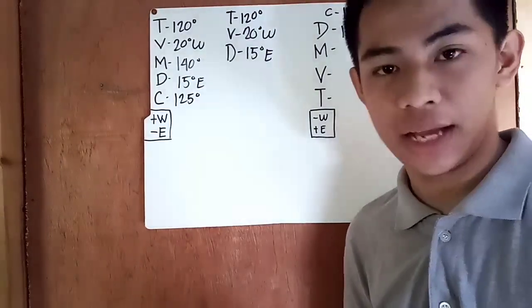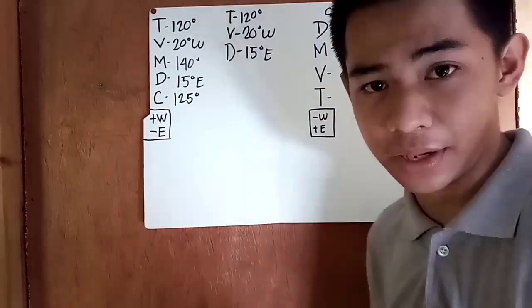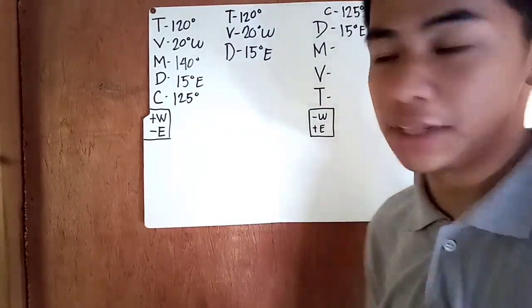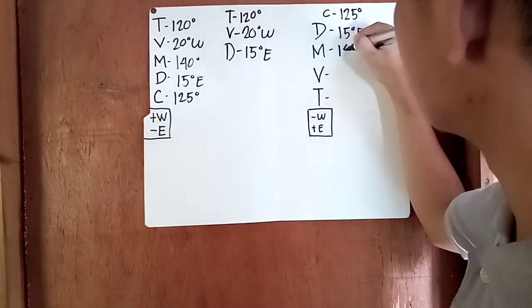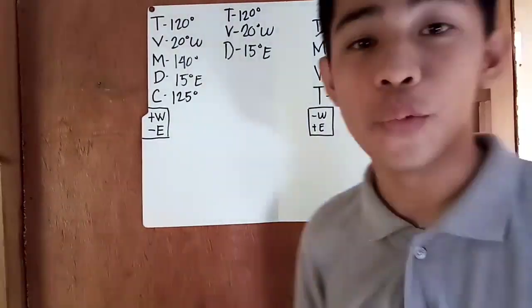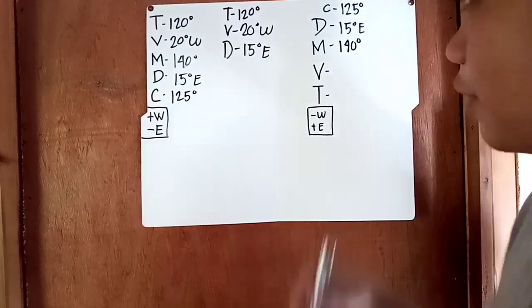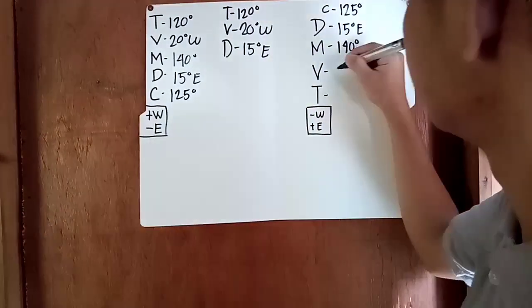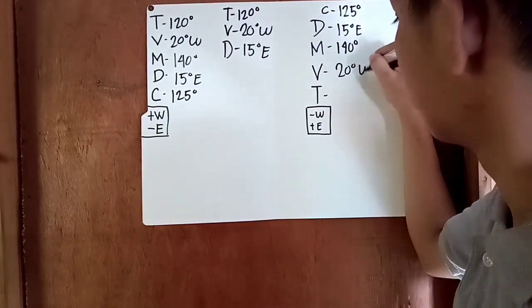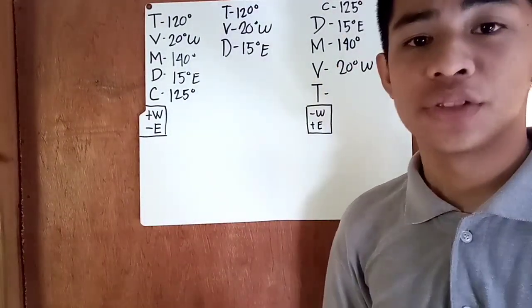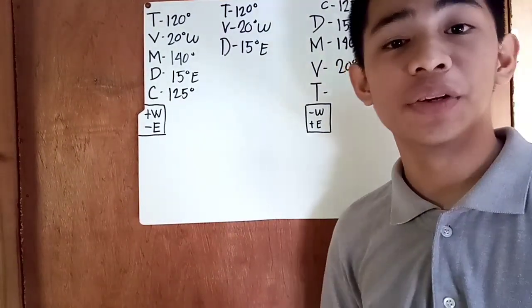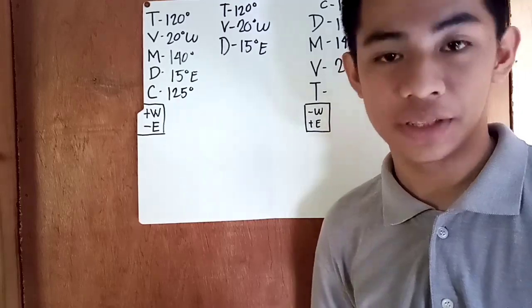So it is east so we must add it. 125 degrees plus 15 degrees easterly is 140. And now we have a variation of 20 degrees western, and it is now west so west is subtracted. 140 degrees minus 20 degrees westerlies is 120 degrees.